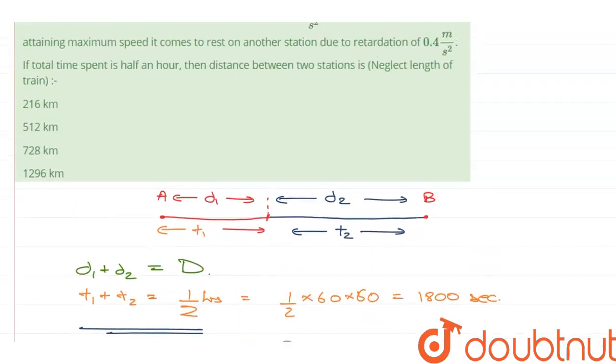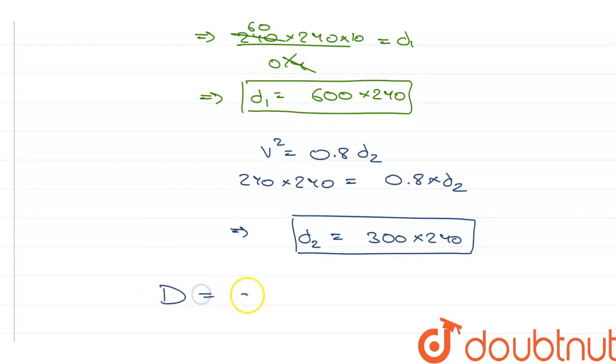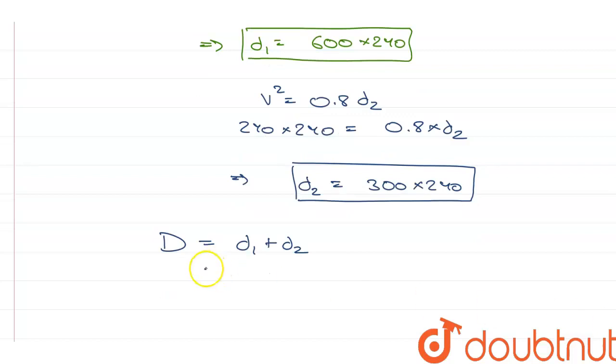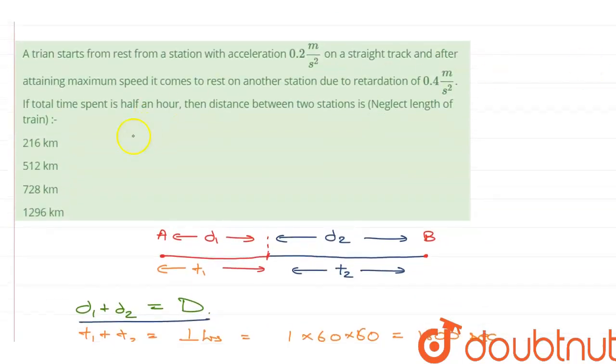And in the question we had to find out the total distance and the total distance was D1 plus D2, that is capital D. So, D is equal to D1 plus D2 is equal to 600 into 240 plus 300 into 240 is equal to, let's take 240 common, 600 plus 300 which is equal to 240 into 900 meters. To convert it into kilometers I will divide it by 1000. So, 240 into 900 upon 1000, all the zeros get cancelled which gives me 24 into 9 which is 216 kilometers. So, the distance between the two stations is 216 kilometers.